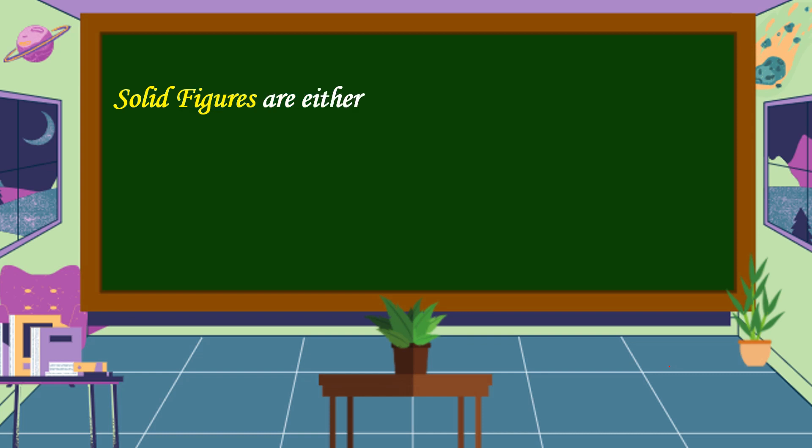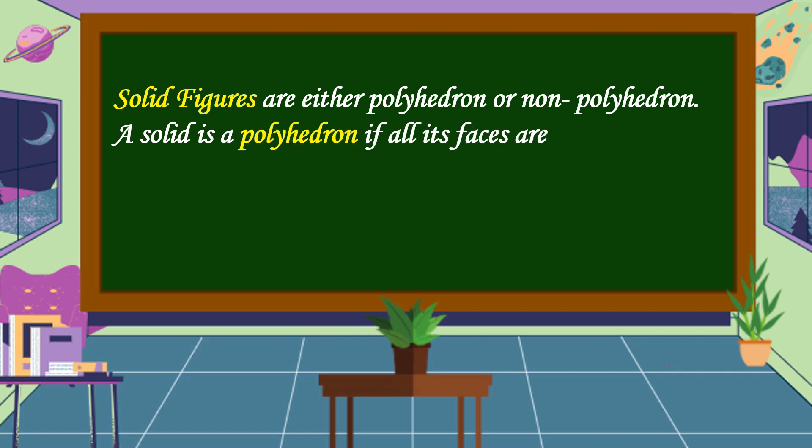Solid figures are either polyhedron or non-polyhedron. A solid is a polyhedron if all its faces are polygons. Otherwise, it is a non-polyhedron.